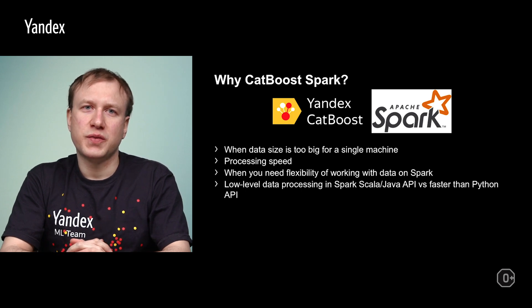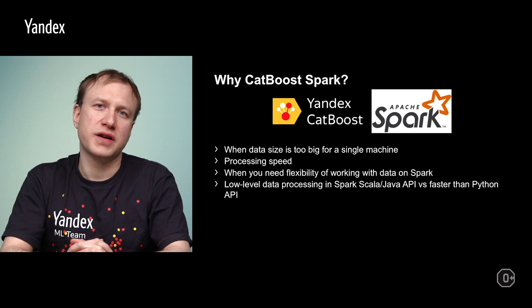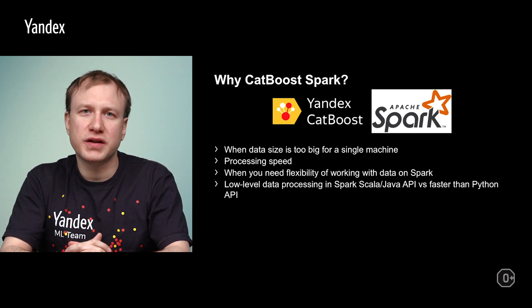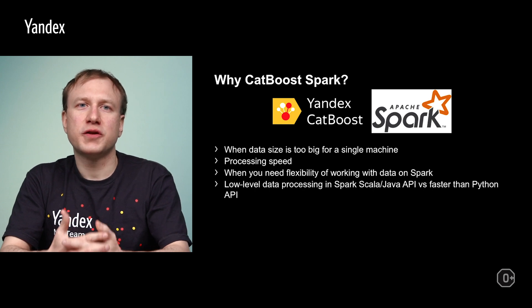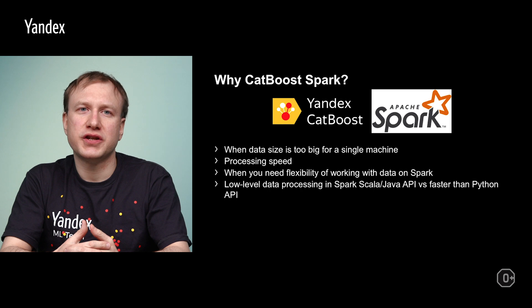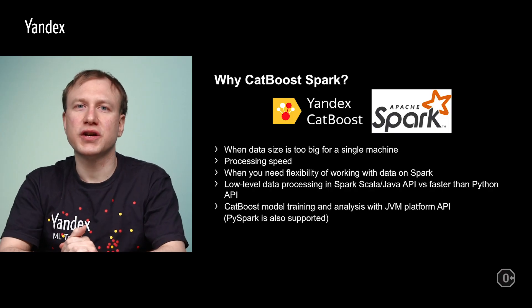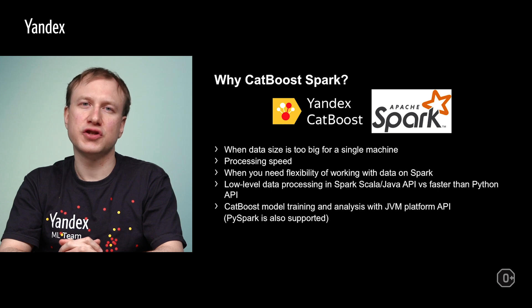Another reason is that low-level data processing in Spark's Scala and Java API is faster than the Python API typically used by data scientists working locally with libraries such as NumPy, Pandas, and scikit-learn. While these libraries are well optimized for common operations, manipulating data with custom functions on individual elements is typically very slow in an interpreted language like Python. Also, the widely-used CPython implementation has a global interpreter lock that limits multi-threaded code. Standalone CatBoost library doesn't have API bindings for training and model analysis on the JVM platform, but CatBoost Spark fills this gap and allows training and model analysis with JVM API.